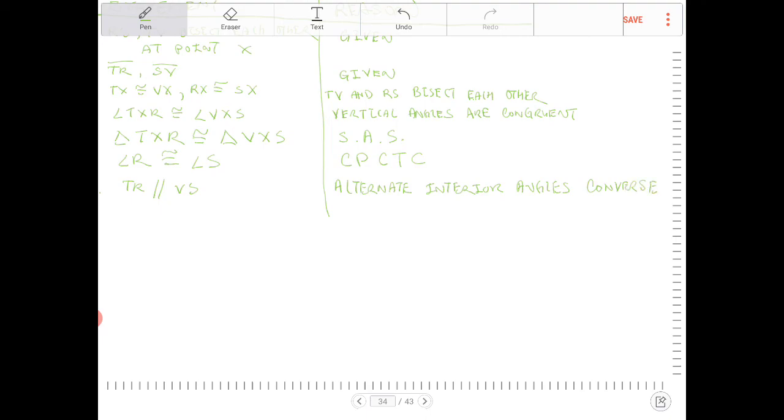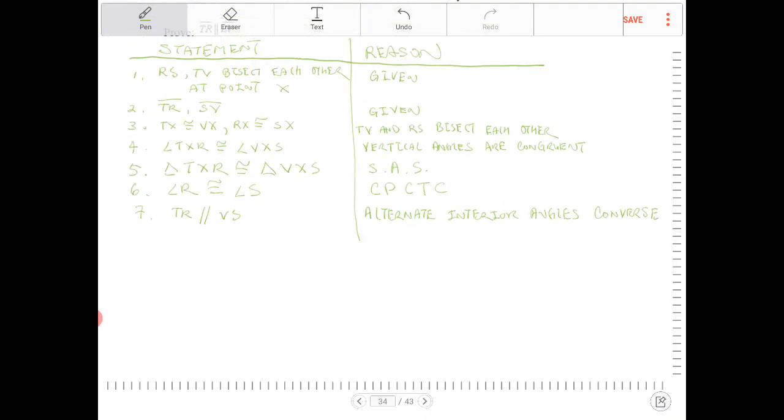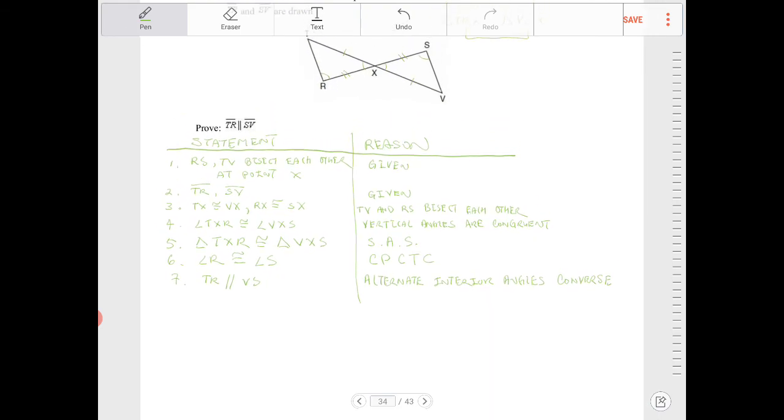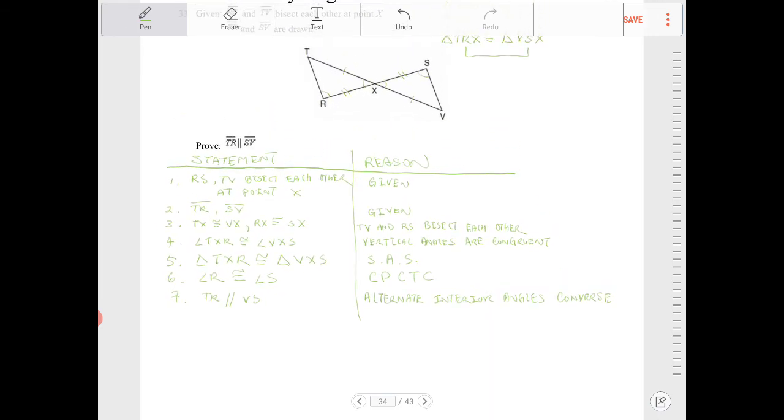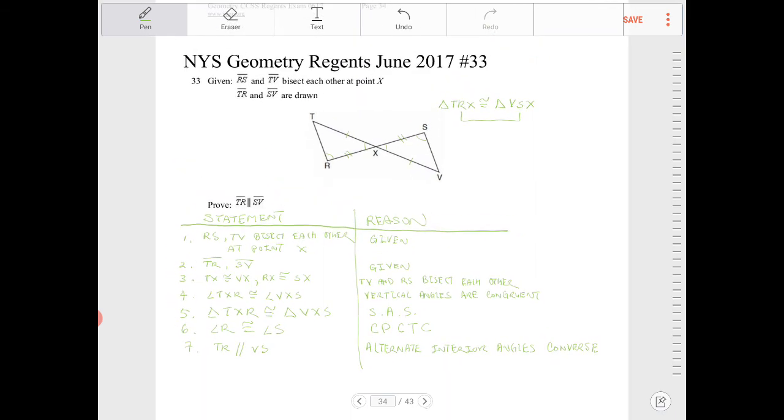Typically, you know, we state that the alternate interior angles are congruent when we have a pair of parallel lines cut by transversal. Because we're going backwards here, it is necessary to state, you know, it is the reversal of that concept. So now we have a pair of congruent alternate interior angles. So therefore, we can conclude that the two lines must be parallel. And that's essentially it.